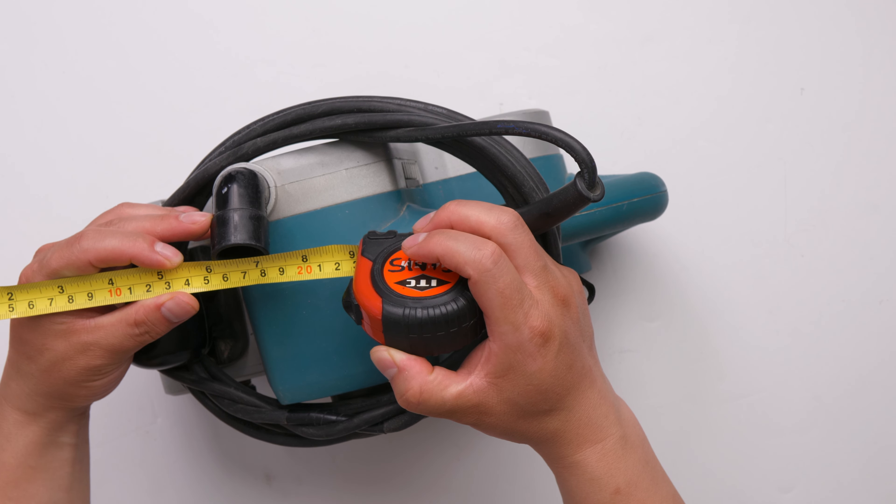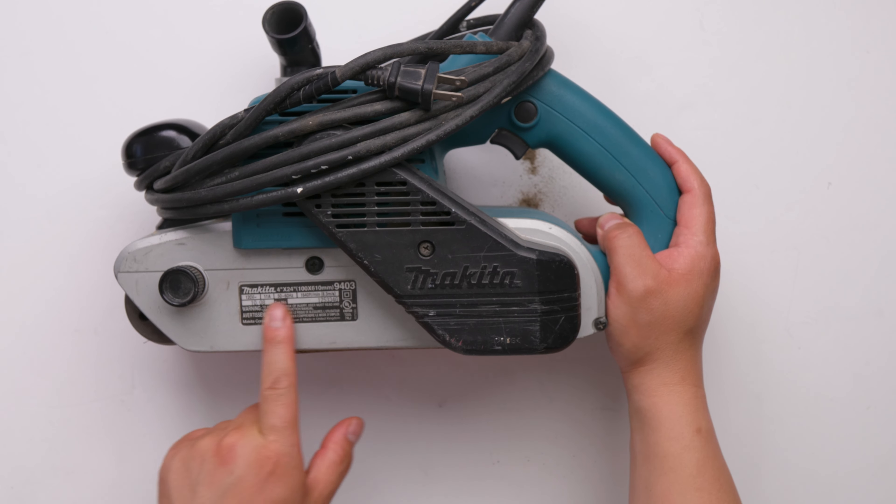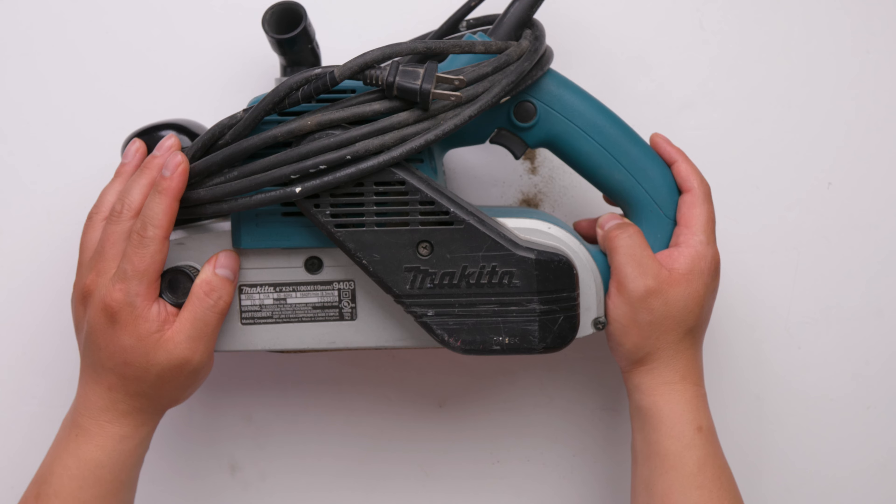The outside of the dust port is one inch and three-sixteenths. The model is 9403, and it's a very powerful belt sander.